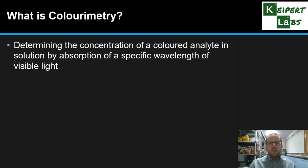So firstly, what is colorimetry? Essentially we are trying to determine the concentration of a colored substance, an analyte, a particular thing that we're trying to detect, by looking at how it absorbs light of a specific wavelength, and that is visible light.